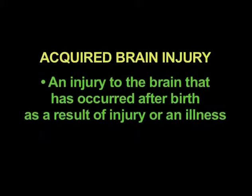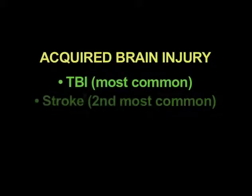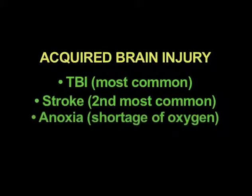An acquired brain injury is a brain injury that has occurred after birth, and it's usually the result of an injury or an illness. Examples include traumatic brain injury, which is the most common form, and strokes, which are the second most common form. Anoxia — a shortage of oxygen to the brain — is frequently seen when people have heart attacks or are exposed to unusual gases like carbon monoxide.